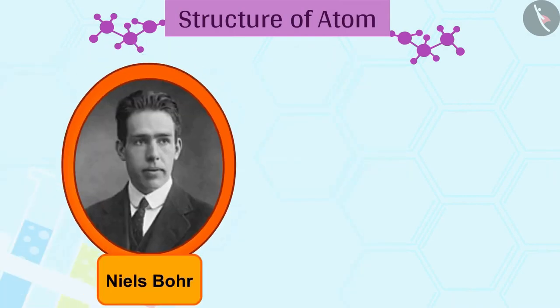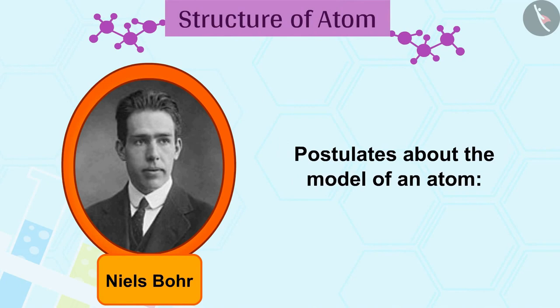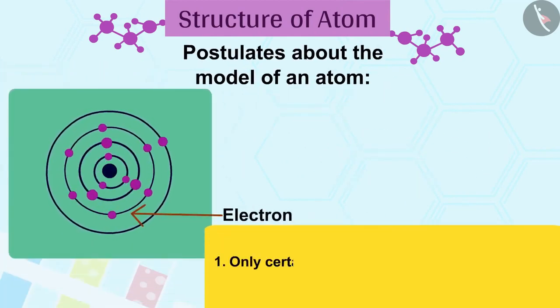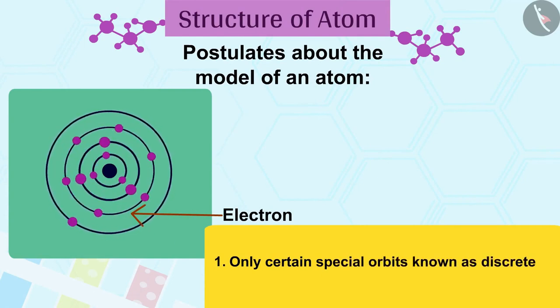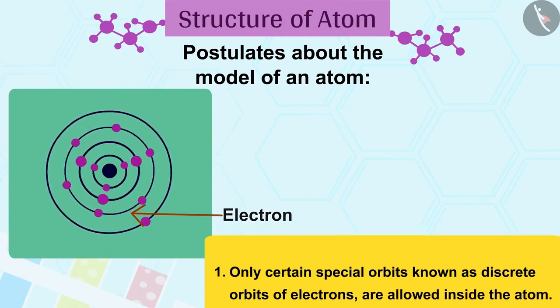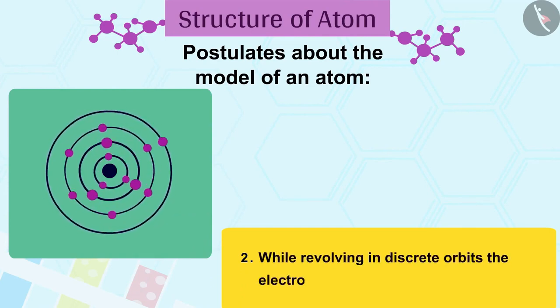In order to overcome the objections raised against Rutherford's model of the atom, Niels Bohr put forward the following postulates about the model of an atom. 1. Only certain special orbits known as discrete orbits of electrons are allowed inside the atom. 2. While revolving in discrete orbits, the electrons do not radiate energy.